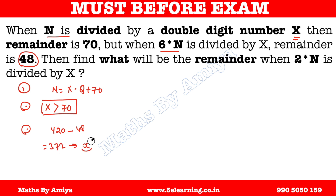So X is a factor of 372. The remainder theorem says: however many times the number increases, the remainder increases by the same factor. So 6 times the original remainder minus the new remainder — that is 372 — must be a multiple of X, because we are subtracting remainders.